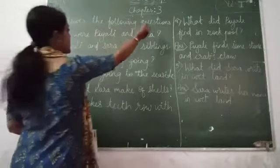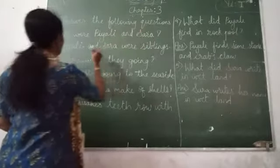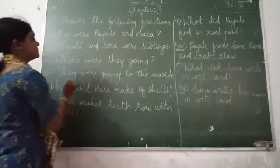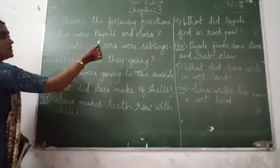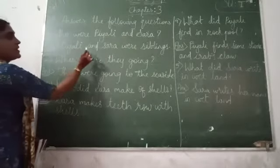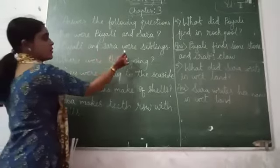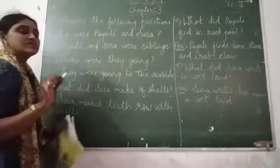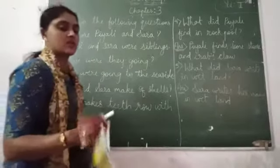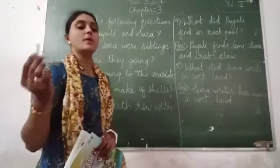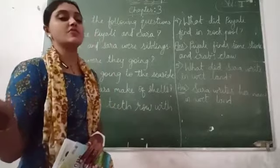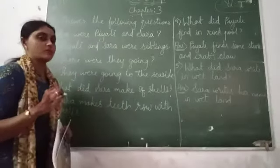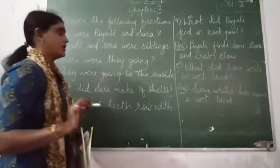Ask the following questions. Who were Piyagin and Sara? Piyagin and Sara were siblings. These are the sisters. We call them siblings.